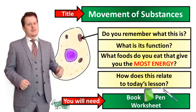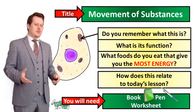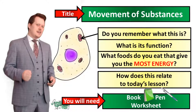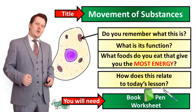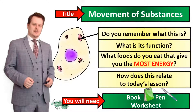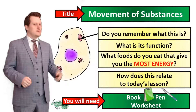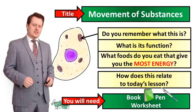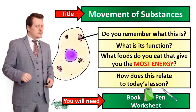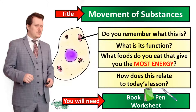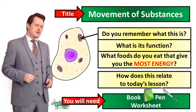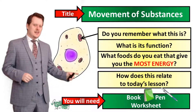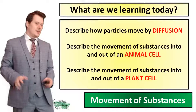This organelle is called the mitochondria and it is the site of aerobic respiration. When suggesting what foods give you the most energy, I hope your suggestions include foods with a lot of sugar content. But how is that going to relate to today's lesson? Let's find out.